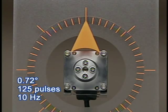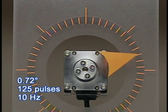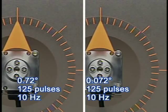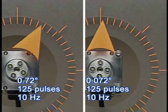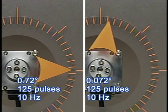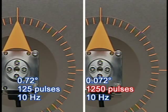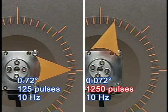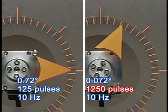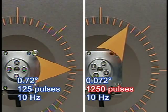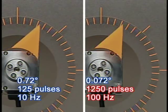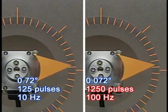To turn 90 degrees with a 0.72 degree step angle, you need 125 pulses. To turn one tenth of it, 0.072 degrees, 125 pulses makes only a small angle movement. To turn 90 degrees, you need 1250 pulses. But if the pulse speed is the same, it rotates very slowly. So you need to increase the pulse speed ten times faster.